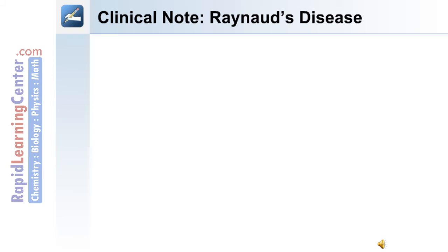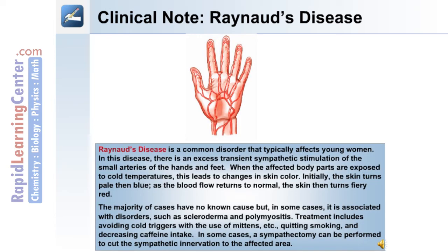The following is a clinical note on Raynaud's disease. Raynaud's disease is a disorder that typically affects young women. In this disease, there is excess transient sympathetic stimulation of small arteries in the hands or feet. When the affected body parts are exposed to cold temperatures, this leads to changes in skin color — initially the skin turns pale, then blue, and as blood flow returns to normal, the skin turns a fiery red. The majority of cases have no known cause; in some cases it is associated with disorders such as scleroderma and polymyositis. Treatment includes avoiding cold triggers with the use of mittens, quitting smoking, and decreasing caffeine intake. In some cases, a sympathectomy can be performed to cut the sympathetic innervation to the affected area.